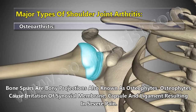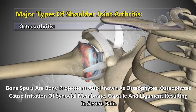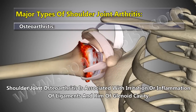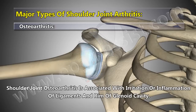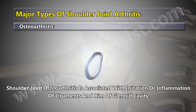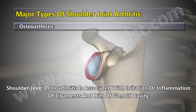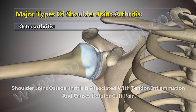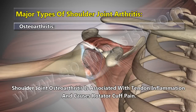Osteophytes cause irritation of the synovial membrane, capsule, and ligament, resulting in severe pain. Shoulder joint osteoarthritis is associated with irritation or inflammation of ligaments and rim of the glenoid cavity, as well as tendon inflammation causing rotator cuff pain.